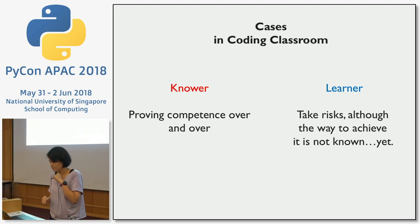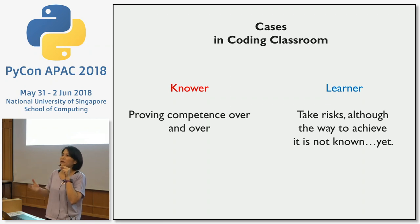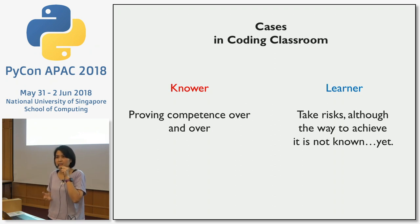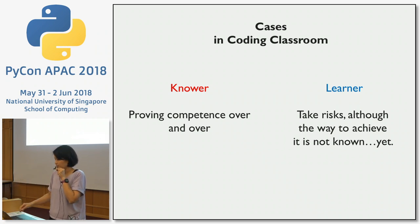Another case: a student already knows something and is very proud to show it over and over. It's great to see as a teacher, but then we start to notice this student is not very open to discovering something else. That's a knower. A learner, by contrast, would be more open to taking risks and learning new methods of doing things, even when they already know one way.